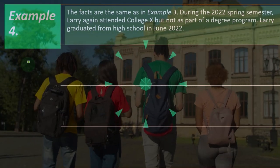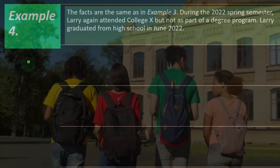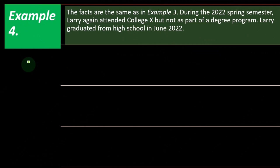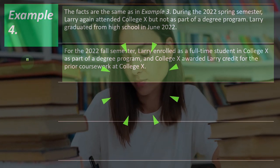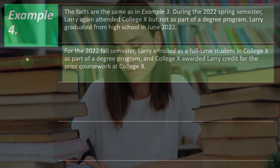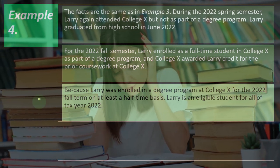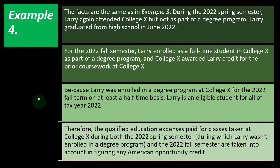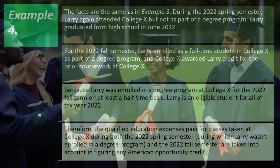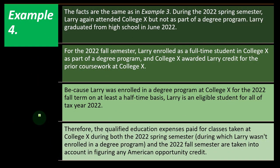Example four: The facts are the same as example three. During the 2022 spring semester, Larry again attended College X but not as part of a degree program. Larry graduated from high school in June 2022. For the 2022 fall semester, Larry enrolled as a full-time student in a degree program at College X, and College X awarded Larry credit for prior coursework. Because Larry was enrolled in a degree program on at least a half-time basis for the 2022 fall term, Larry is an eligible student for all of tax year 2022, and qualified expenses for both semesters are taken into account.